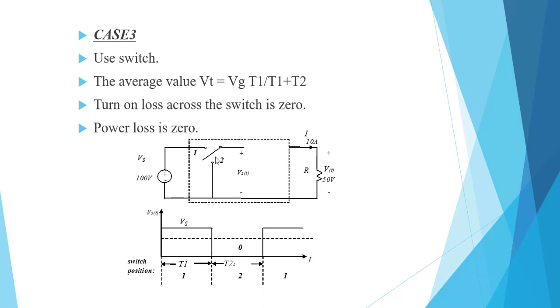In case 3, when we use a switch, conduction losses will be zero and switching losses will be zero. When we have total power loss of zero, output power is 500 watts but losses are zero. The conduction loss is zero because when the switch is on, there's no voltage drop. Switching loss is also zero.